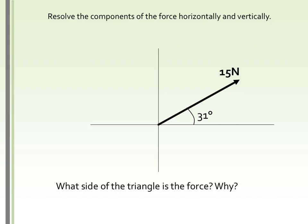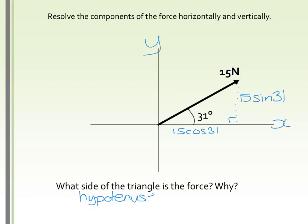This is the kind of resolving we've done so far. We've had a force acting at an angle and we've resolved it into the x and y directions, making a right-angled triangle. The y component will be 15 sin 31 and the x component would be 15 cos 31. The key point is that the main force — the 15 newtons — is always on the hypotenuse, and we're going to use that even on the inclined plane.